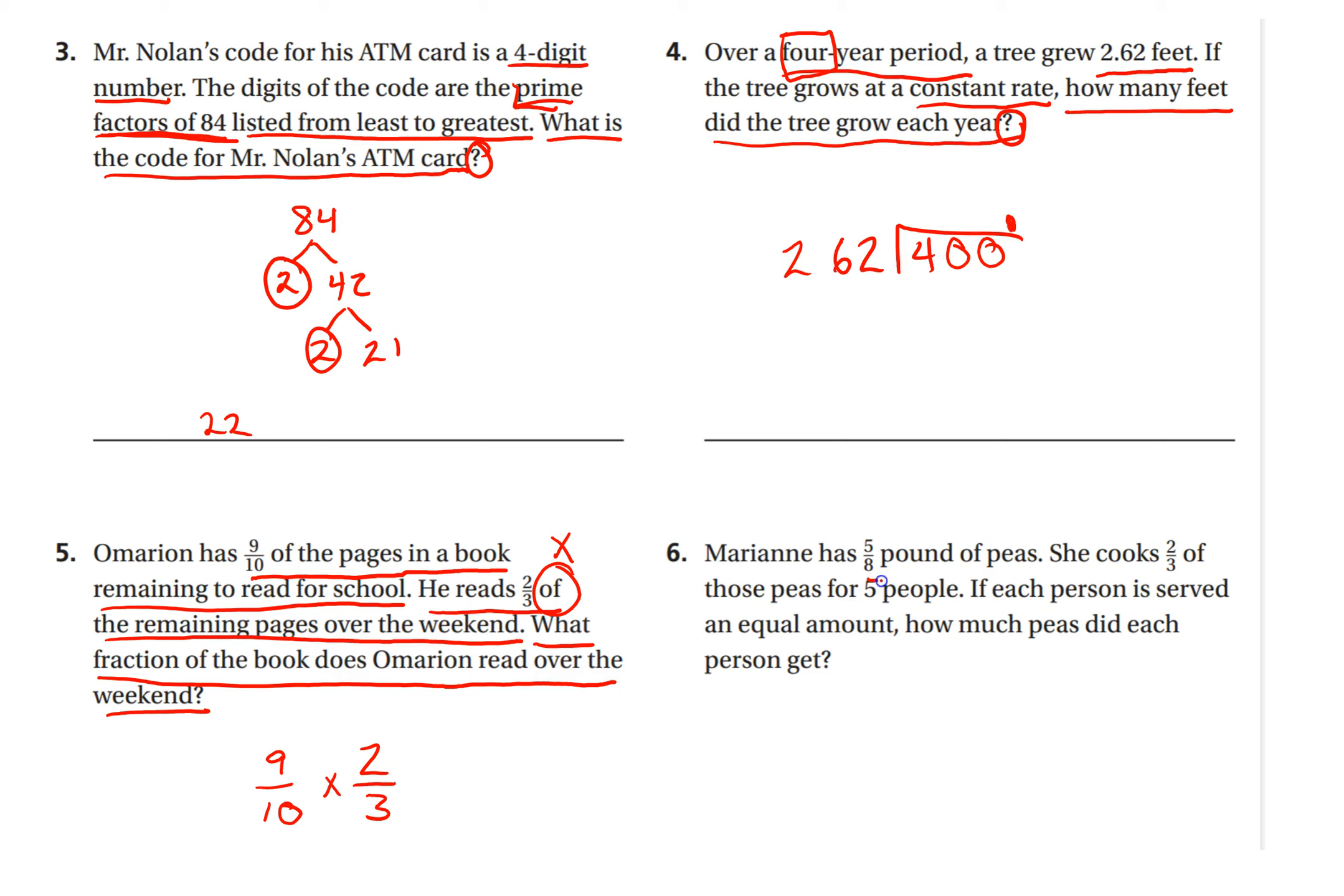Number six, Marianne has five-eighths pounds of peas. She cooks two-thirds of those peas for five people. If each person is served an equal amount, how much peas did each person get? So first we have a few things we need to do here. She starts out with five-eighths pounds. She cooks two-thirds of those peas, two-thirds of them. So we need to multiply how much she has times how much she's cooking, two-thirds. So you can cross-simplify. You're going to get this answer.